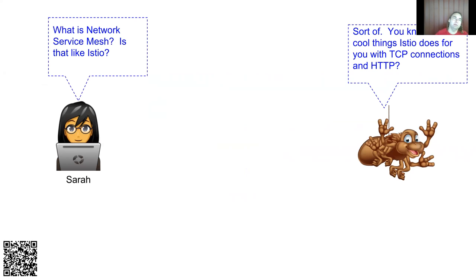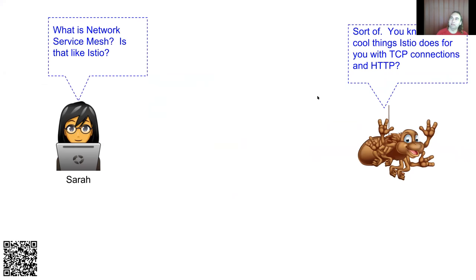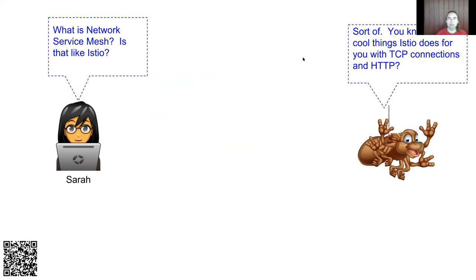So what is Network Service Mesh? Because it contains 'service mesh,' it's natural to think — is that like Istio? The truth is it actually is a lot like Istio. All the cool things Istio does for TCP and HTTP connections, Network Service Mesh does for IP, Ethernet, and whatever other L2 or L3 protocols you care about. Most people, most of the time, care about IP and Ethernet, but there's a whole slew of others as well.